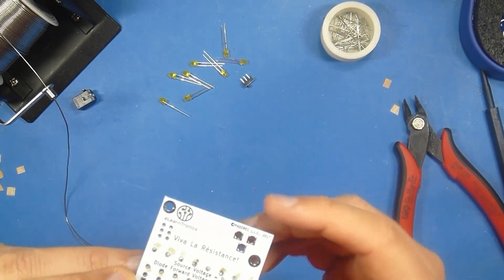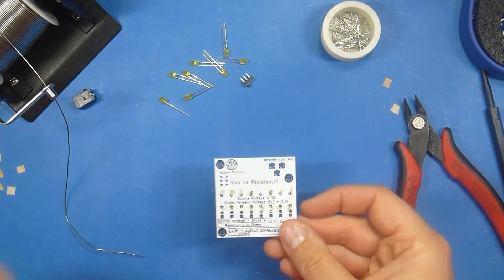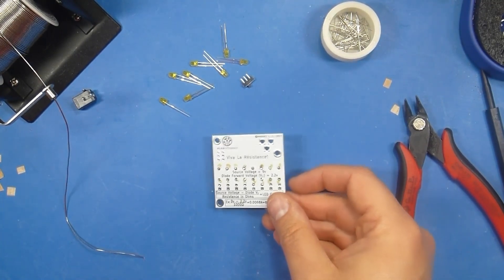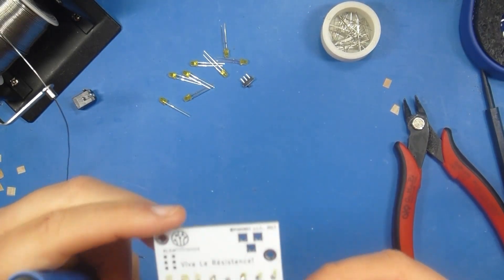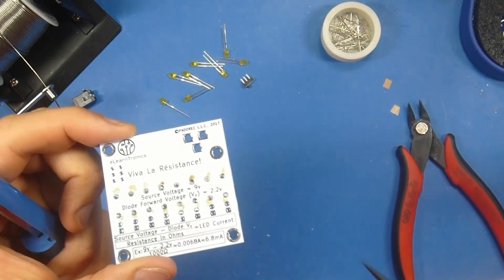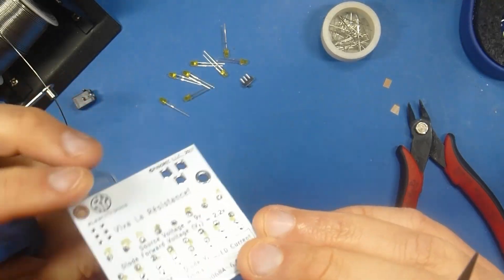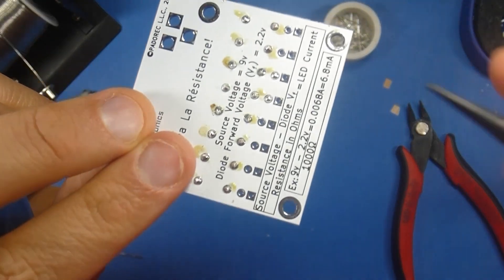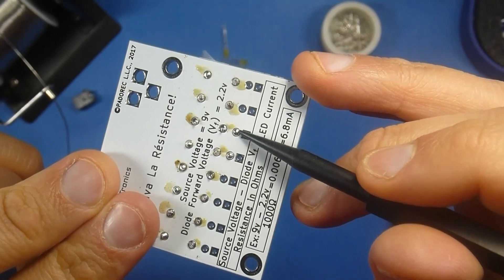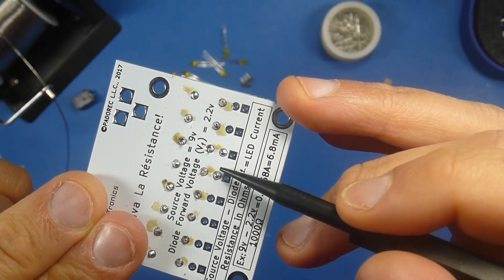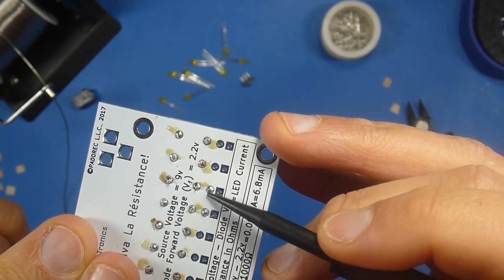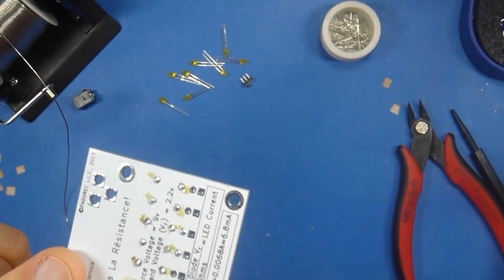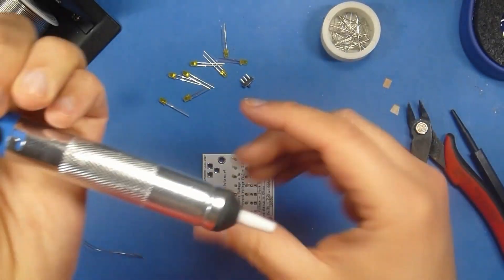So, now we need to figure out what the next component we're going to solder onto the board is. We want to use the next most flush. Oh, boy. You know what? I accidentally got solder into a through hole. While I was soldering the resistors, these two through holes, which are for the LEDs, got solder in them.